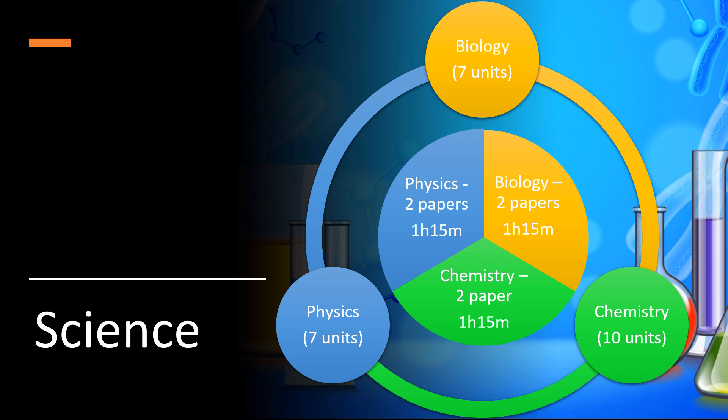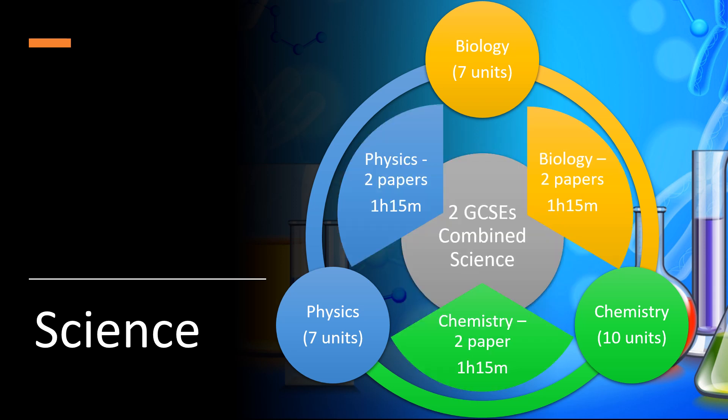They are assessed at the end with two terminal examination papers: two for biology, two for chemistry and two for physics, all of which are an hour and 15 minutes long. The results of those are combined together to give an average score and that average score will be used to generate two grades and learners will be awarded two GCSEs in science.